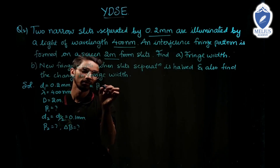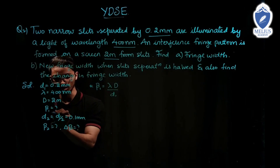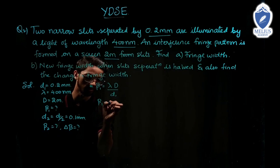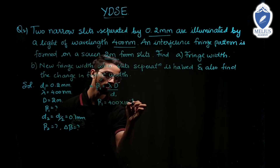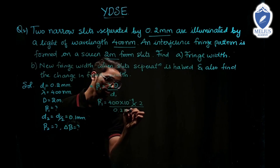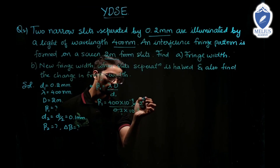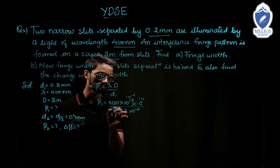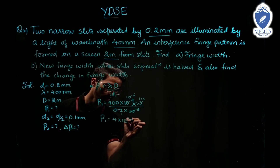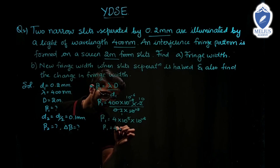Beta 1 equals lambda times D divided by d1. Beta 1 equals 400 into 10⁻⁹ into 2 divided by 0.2 into 10⁻³. Cancelling 10⁻⁹ and 10⁻³ gives 10⁻⁶. Then 400 into 2 divided by 0.2 gives 4000, and 4000 into 10⁻⁶ equals 4 into 10⁻³. Therefore beta 1 equals 4 millimeter.